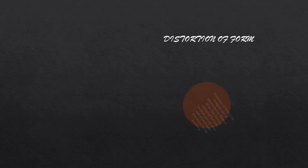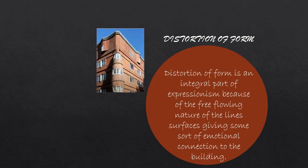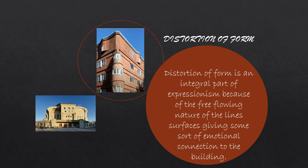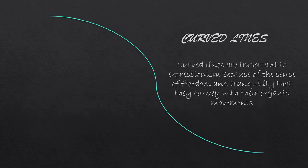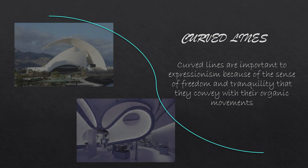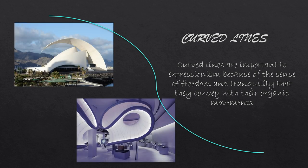Distortion of form is an integral part of Expressionism because of the free-flowing nature of the lines and surfaces, giving some sort of emotional connection to the building. Curved lines are important to Expressionism because of the sense of freedom and tranquility that they convey with their organic movements.